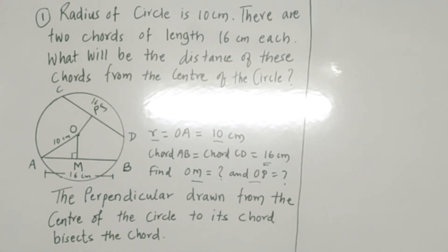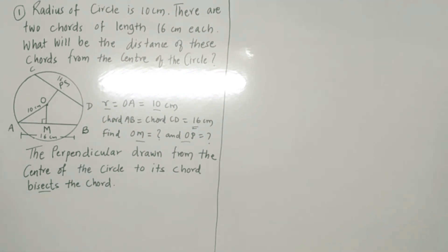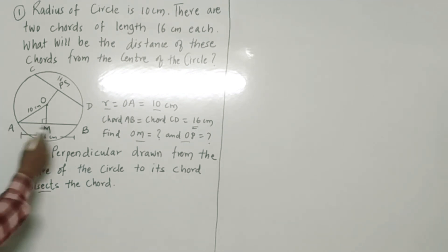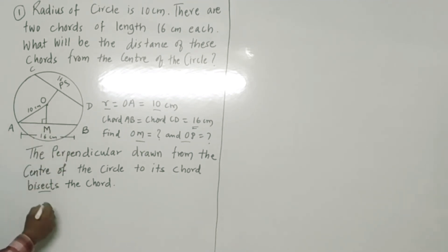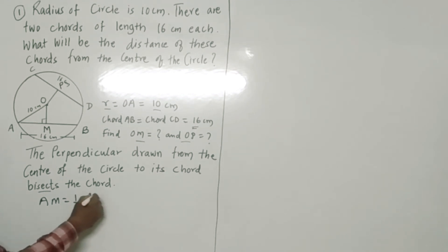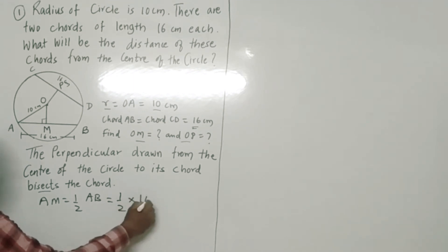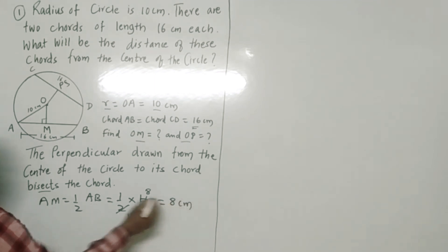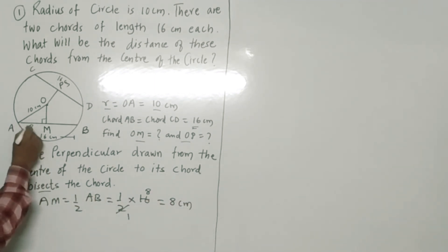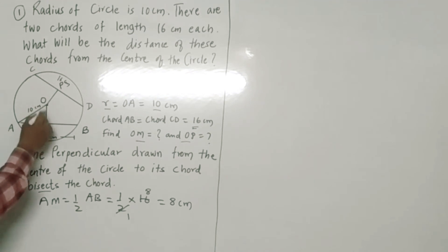Now we know the property of chords: the perpendicular drawn from the center of a circle bisects the chord. Therefore, chord AB is 16 centimeters, so AM is equal to one-half the length of AB, which is equal to one-half into 16, which equals 8 centimeters. So AM is 8 centimeters.